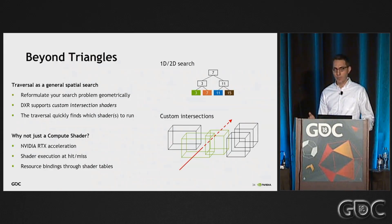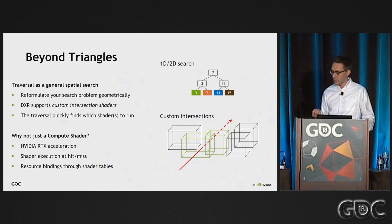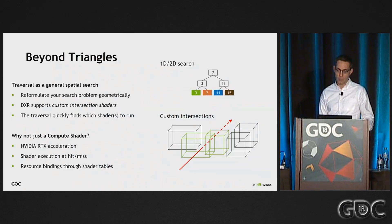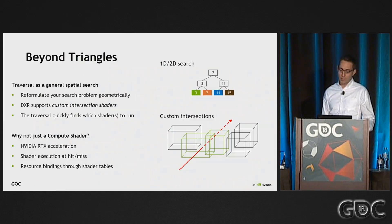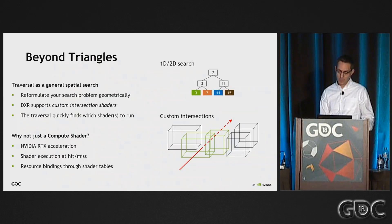So why would you do that instead of just doing it in compute in the first place? One reason is to get hardware RTX acceleration. If you do it in compute, you're bound by the regular pipeline with not much we can do to optimize it. The other thing is that with DXR you get actual shader evaluations at the hit points, and you get individual resources bound to those shaders, so it allows a lot of flexibility.